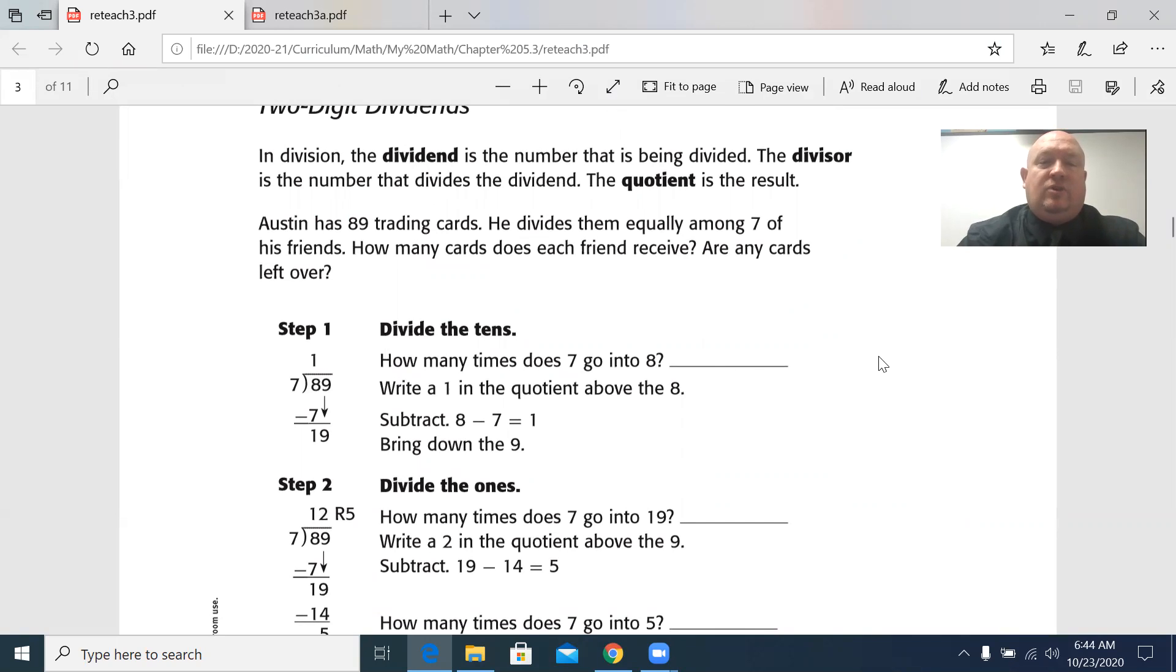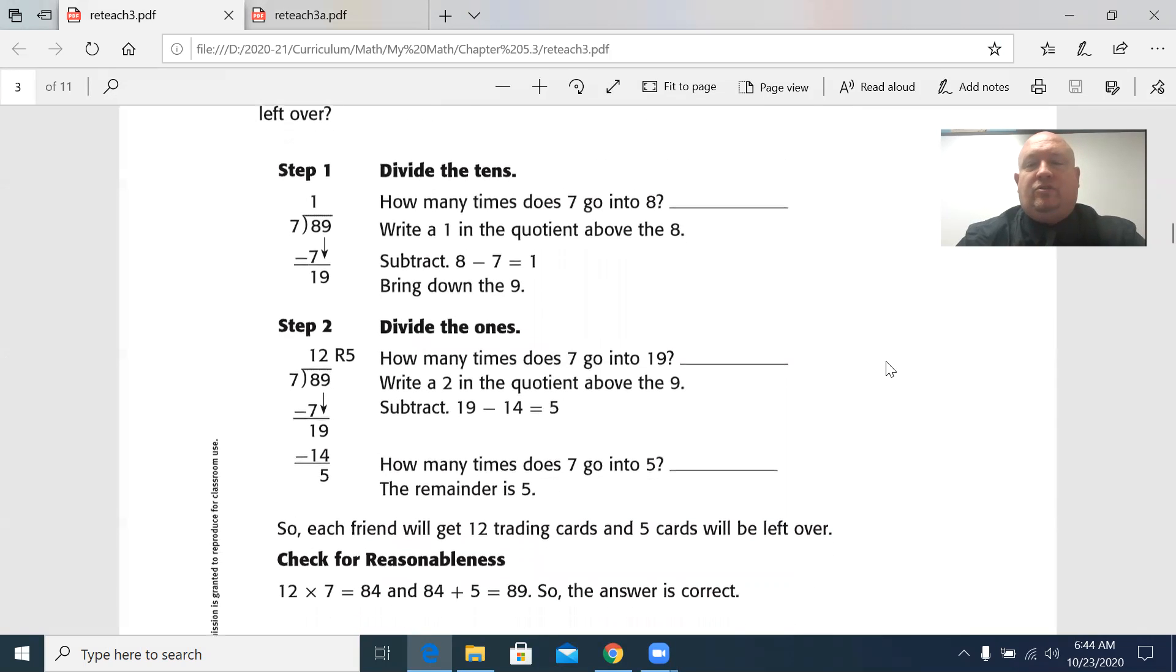Austin has 89 trading cards. He divides them equally among seven of his friends. How many cards does each friend receive? Are any cards left over? So let's go ahead and follow the steps. And it's important that you memorize these steps.